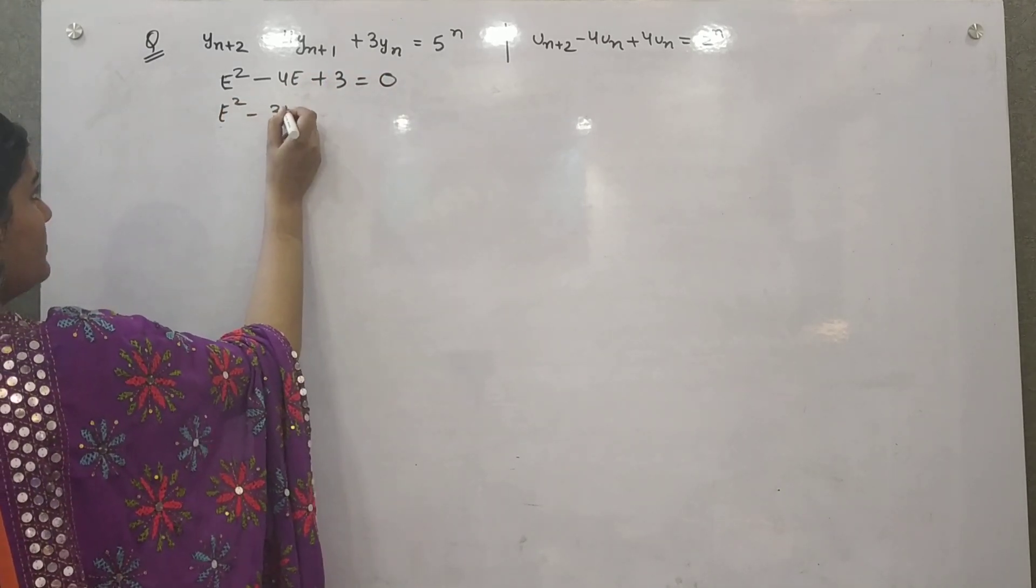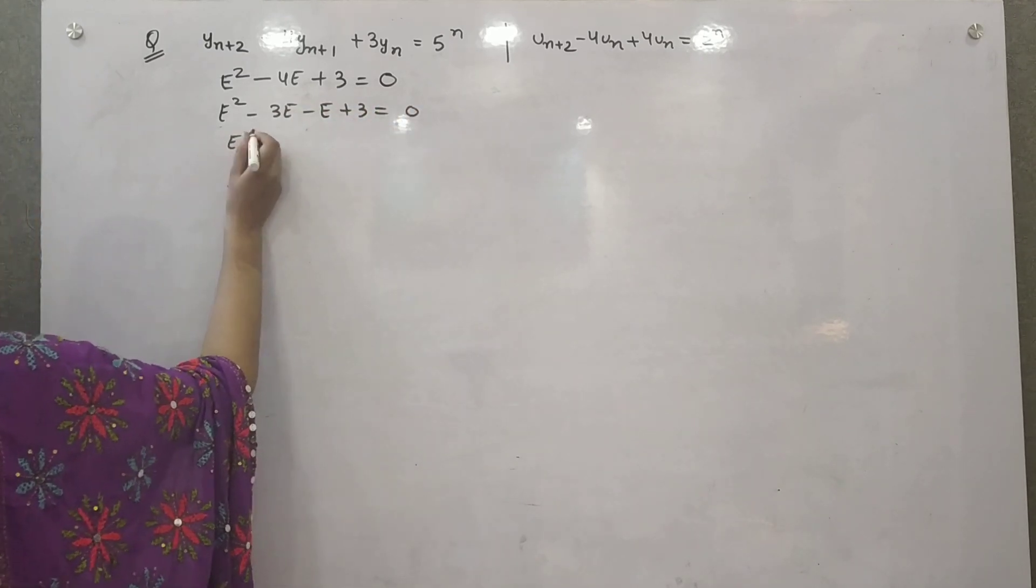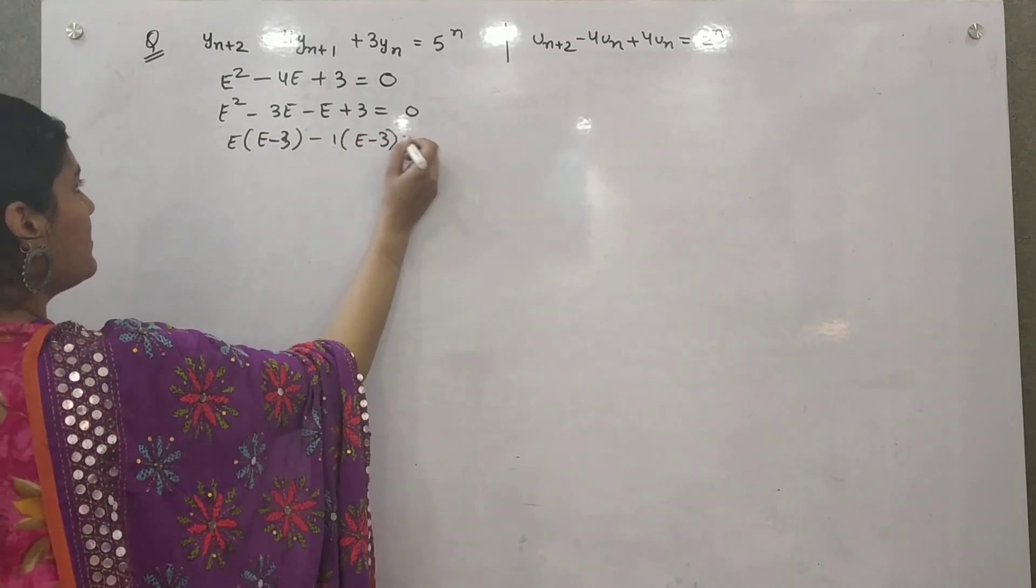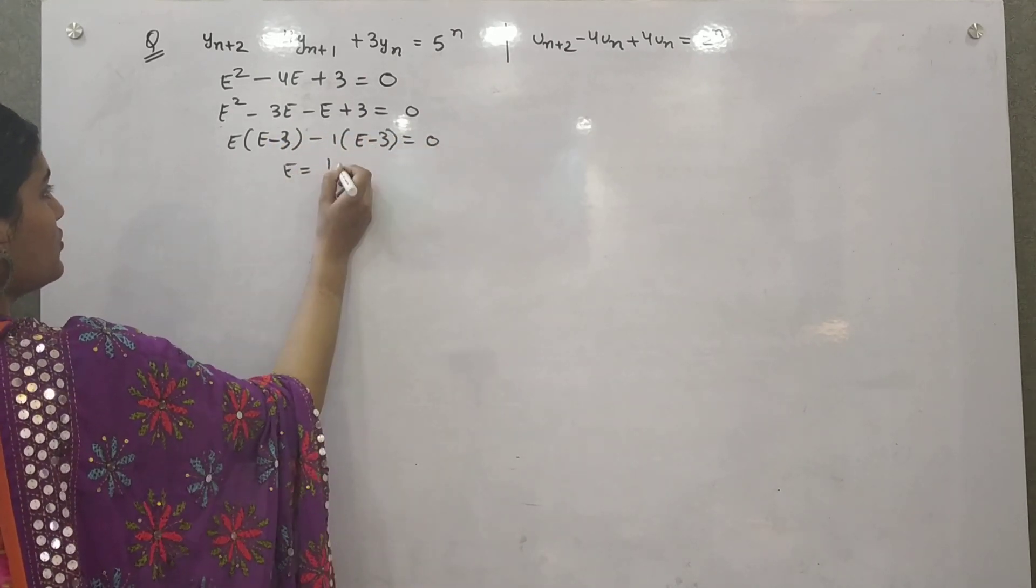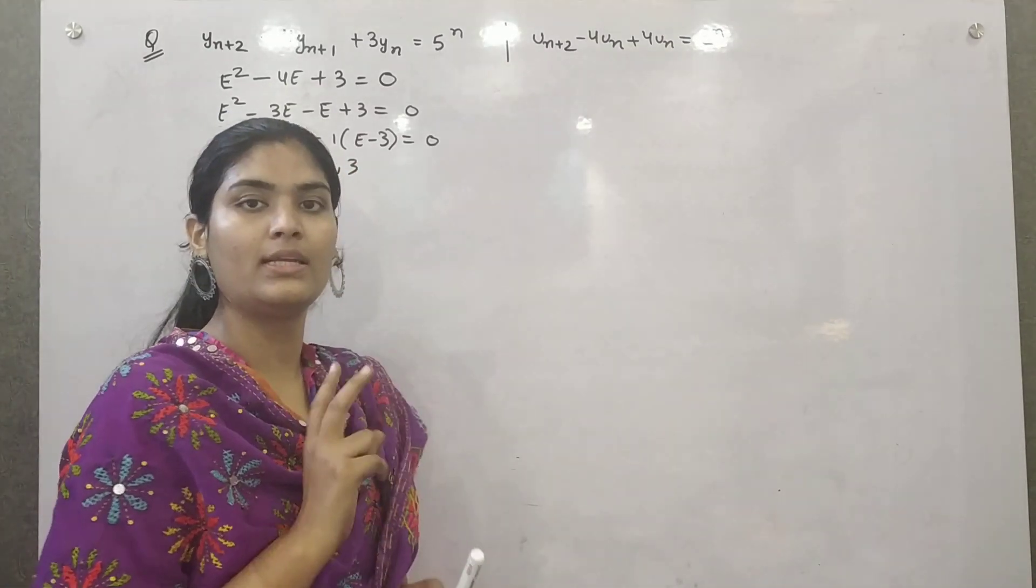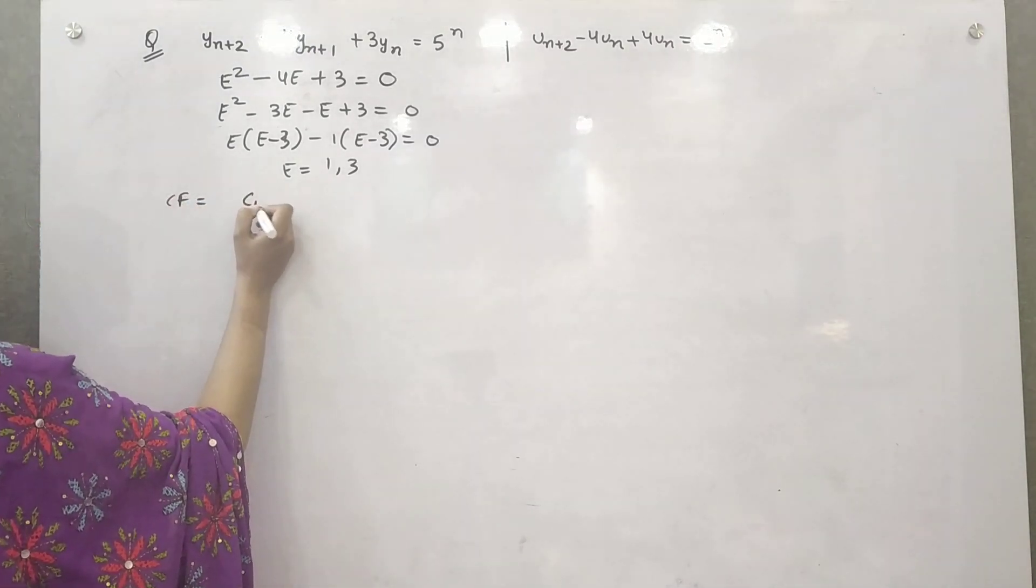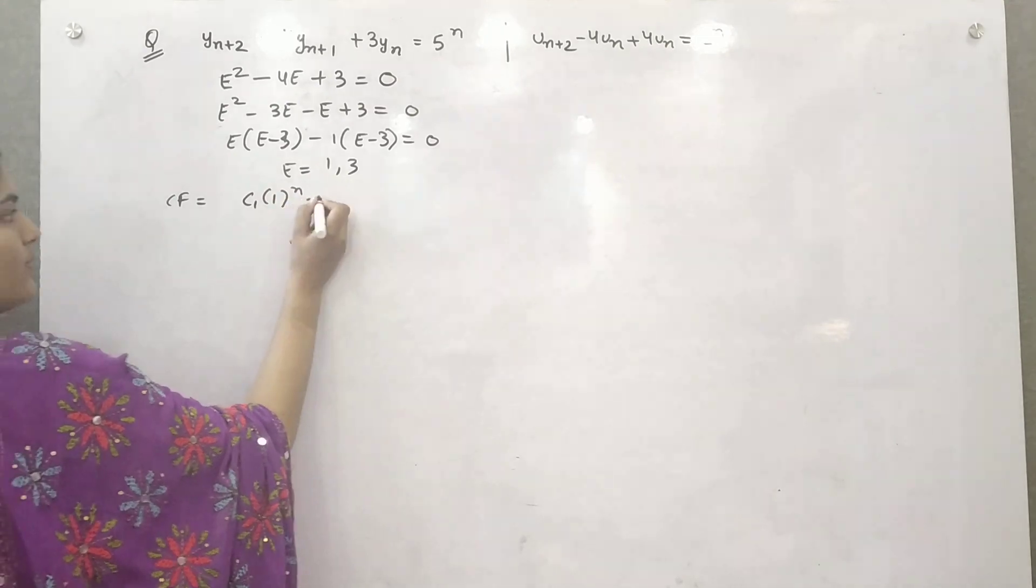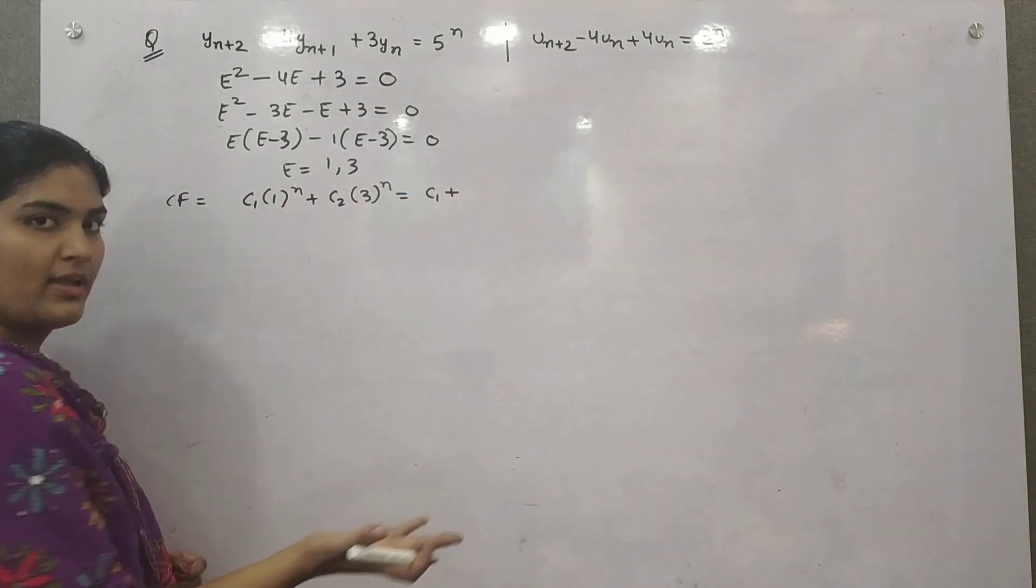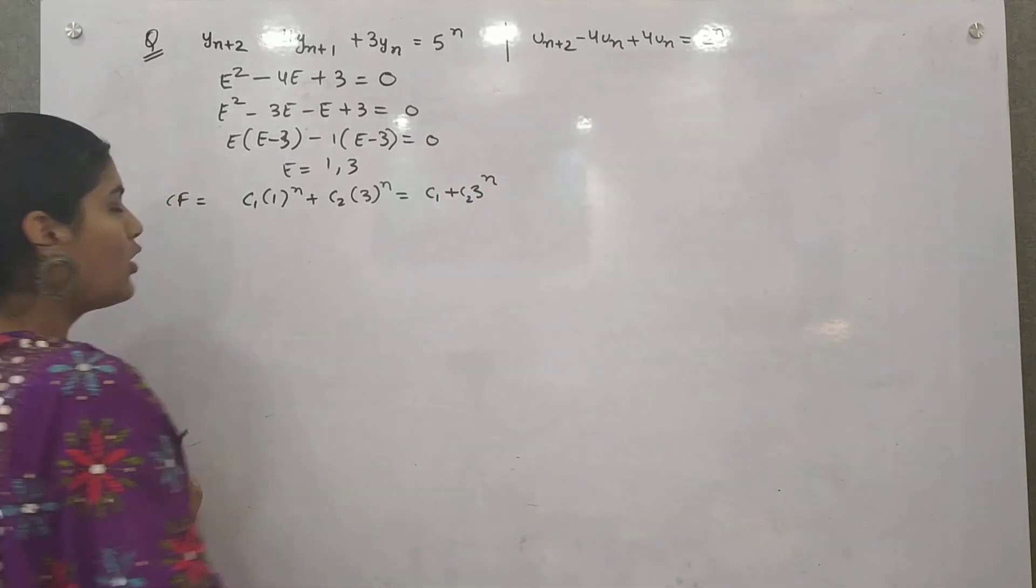If you split it, you will take common. You know how to factorize the function, right? So you have now real but distinct roots. So for that, your solution is c1 times 1 raised to power n plus c2 times 3 raised to power n. Because 1 raised to power n will be 1, so this is your complementary factor.